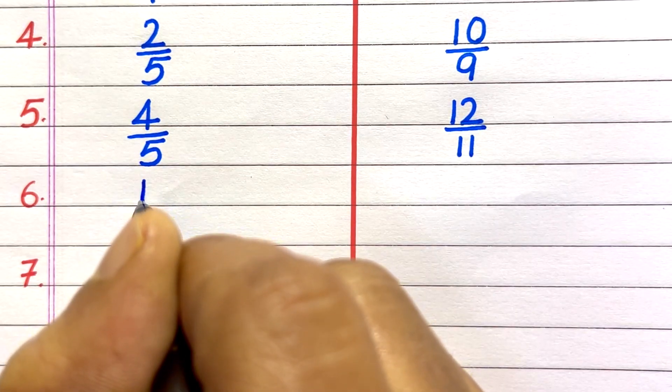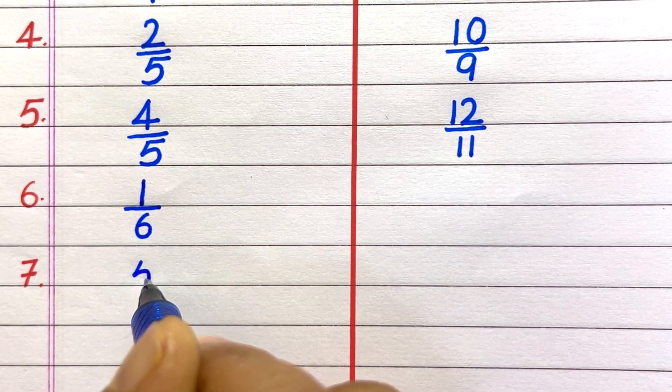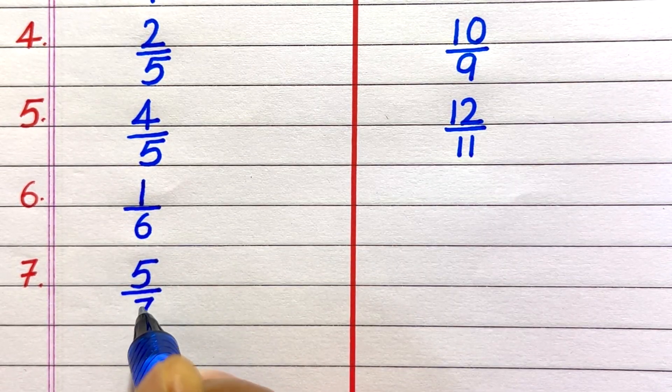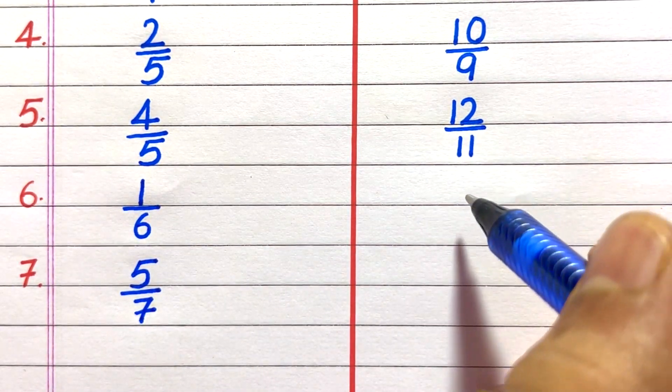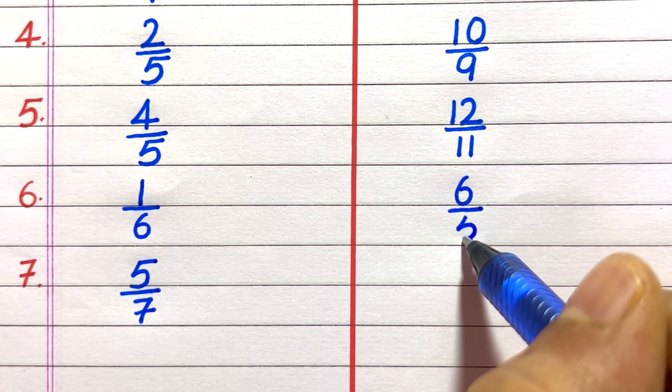Sixth example of a proper fraction is 1 by 6. Seventh, 5 by 7. Sixth example of an improper fraction is 6 by 5.